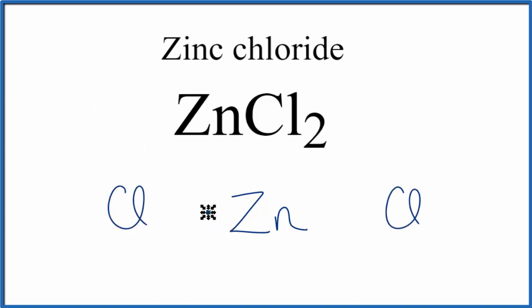Zinc has two valence electrons, and then chlorine, which is in group 17, sometimes called 7a, chlorine has seven valence electrons.